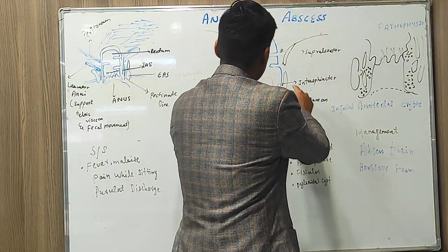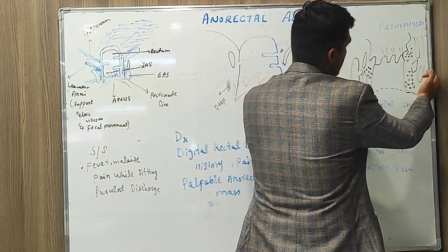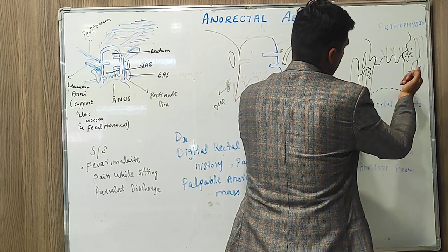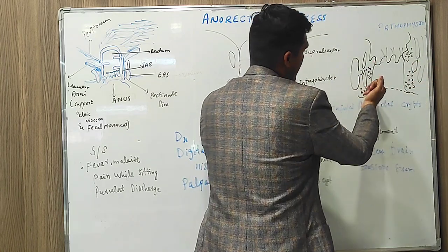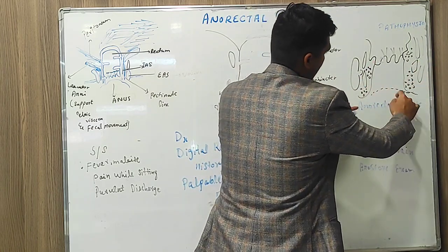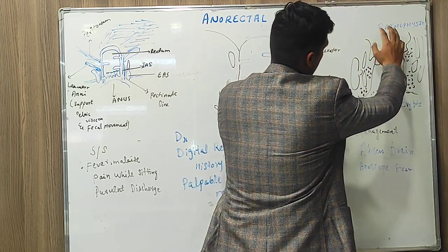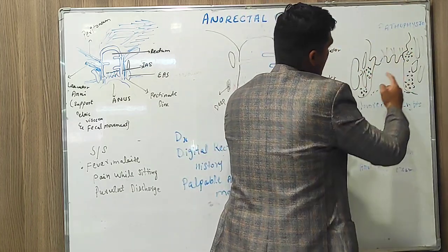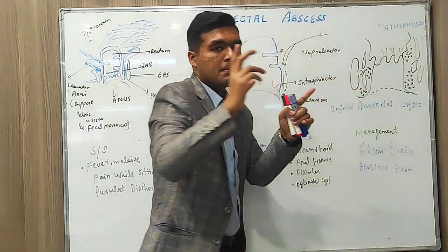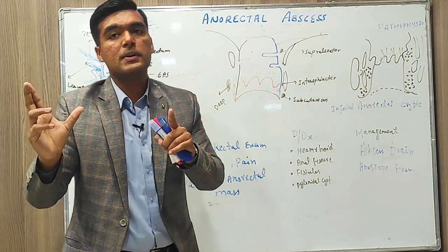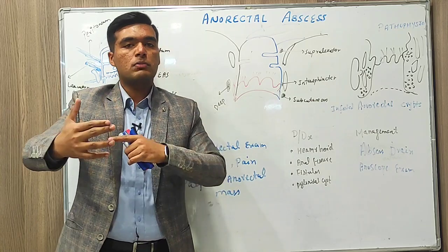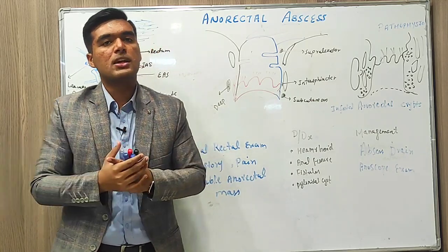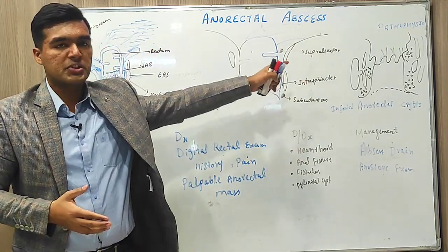When we zoom into this particular area, we see the muscles, external sphincter, internal anorectal sphincter, pectinate line, anus, and rectum above. These crypts are the main cause — 90% of abscess formation is due to those crypts.